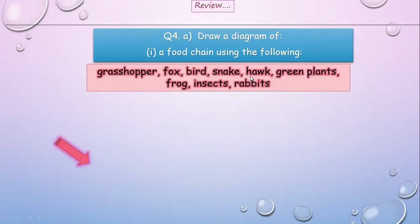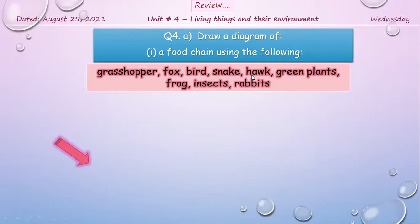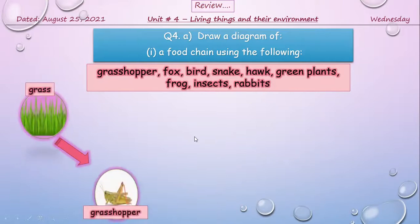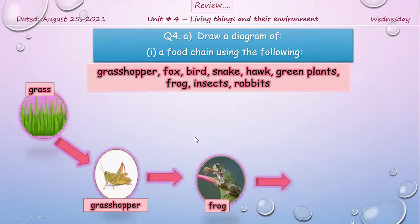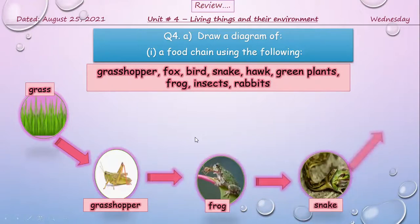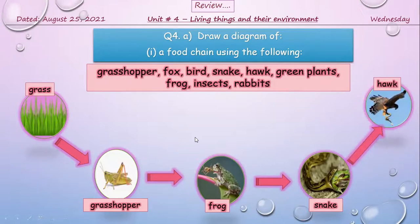This is question number four from Unit Number Four — Living Things and Their Environment. Today is August 25th, Wednesday. We have names of some insects, plants, animals, and birds, and we have to interconnect them to form a food chain. All food chains start from green plants. So: green grass, eaten by a grasshopper, eaten by a frog, eaten by a snake, eaten by a hawk. That is a simple food chain.